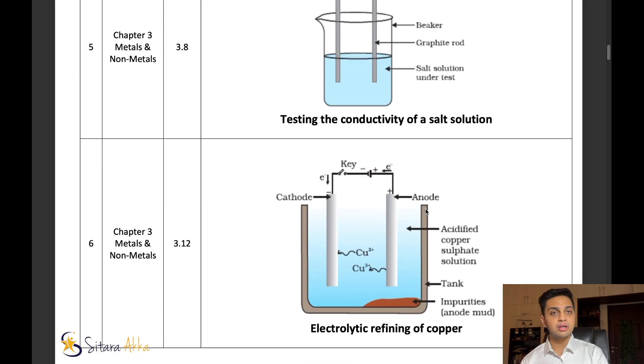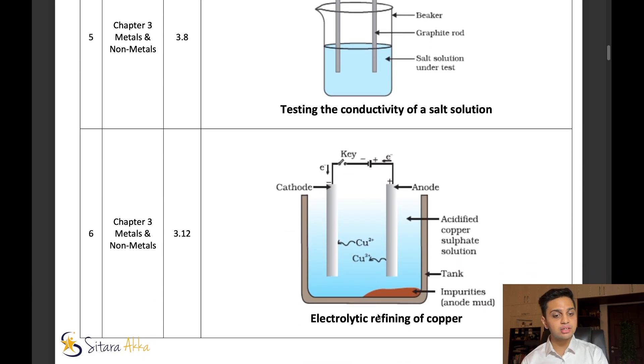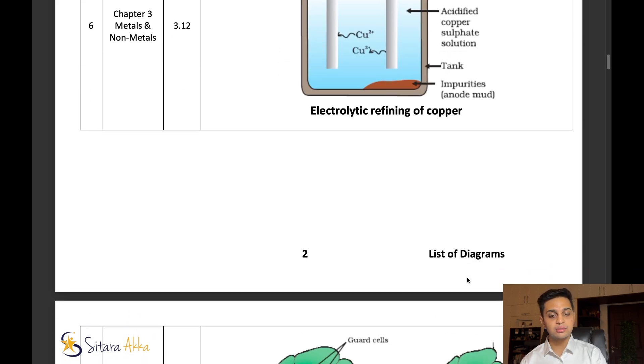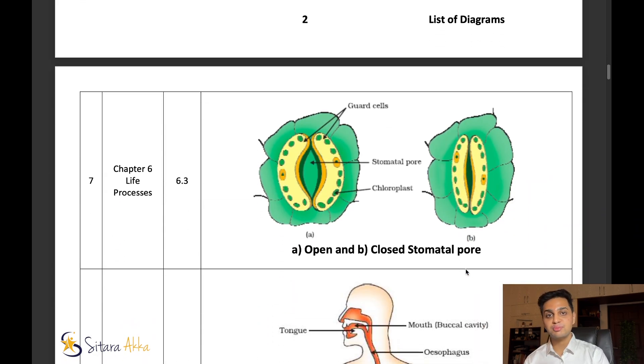This is a very important diagram in this chapter, which is electrolytic refining of copper. In this, we have to mark the anode and cathode, and we also have to mark the electron direction. We have to identify that copper is being formed at the cathode, and the impurity of anode mud is formed over here. Next chapter is life processes. In this chapter, there are very important diagrams. We have to practice all the diagrams in this chapter.